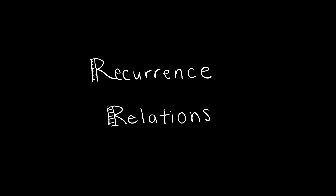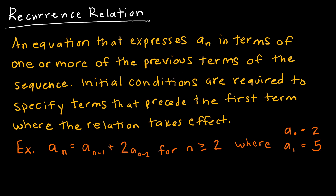In this video, we will talk about recurrence relations, which is just a special kind of sequence. A recurrence relation essentially expresses whatever the next term of our sequence, a sub n, will be in terms of one or more of the previous terms. That's why it's called recursive, because we have to take terms that we had before and use them.